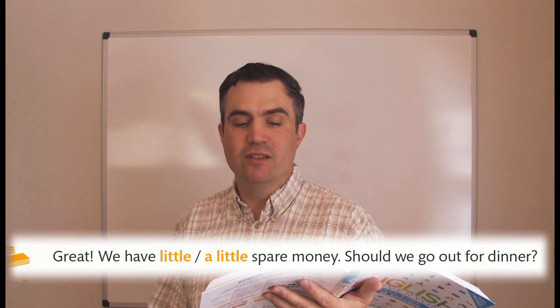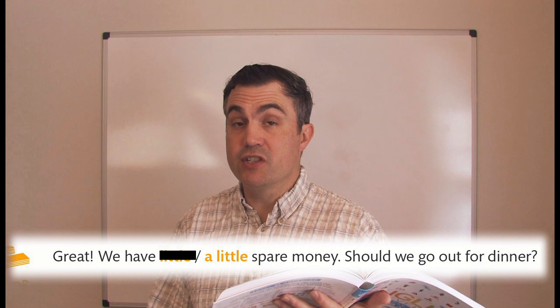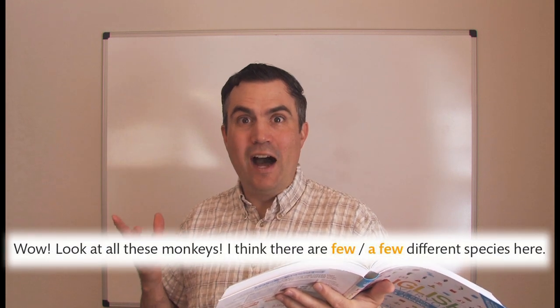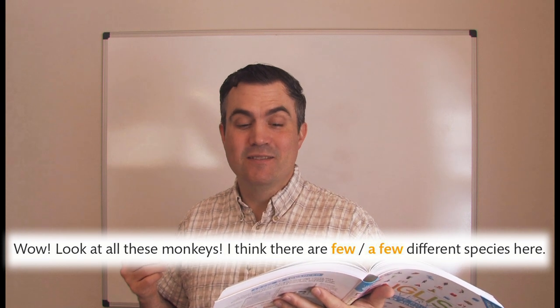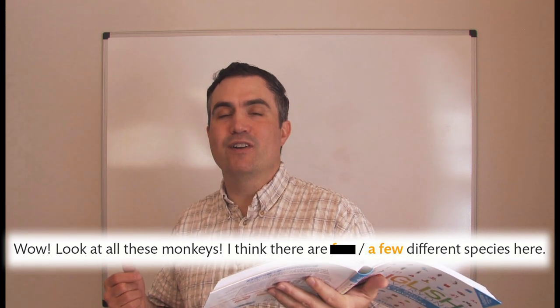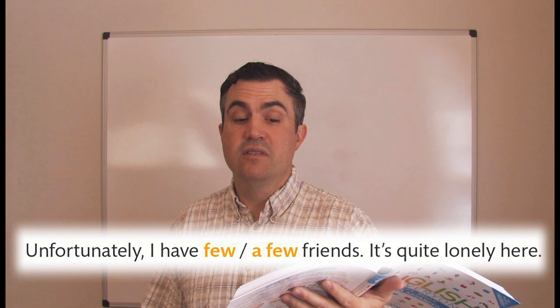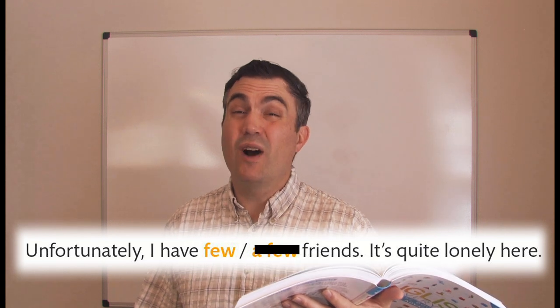Number four. Number four. Great. We have a little spare money. Should we go out for dinner? Number five. Wow. Look at all these monkeys. I think there are a few different species here. All right. Very good. Last one. Number six. Unfortunately, I have few friends. It's quite lonely here. Okay. How did you do?